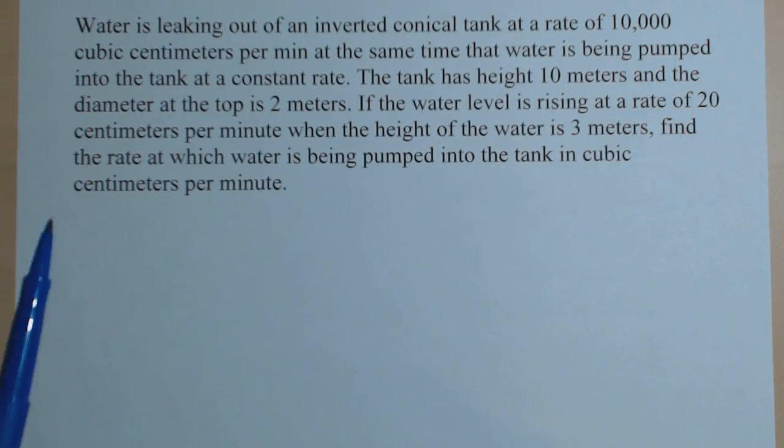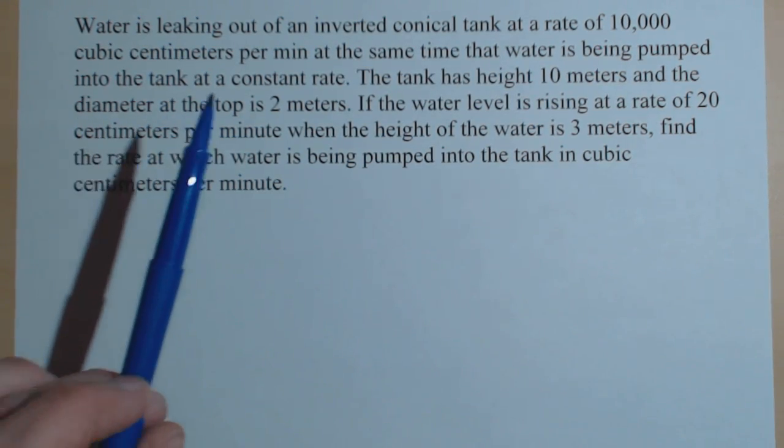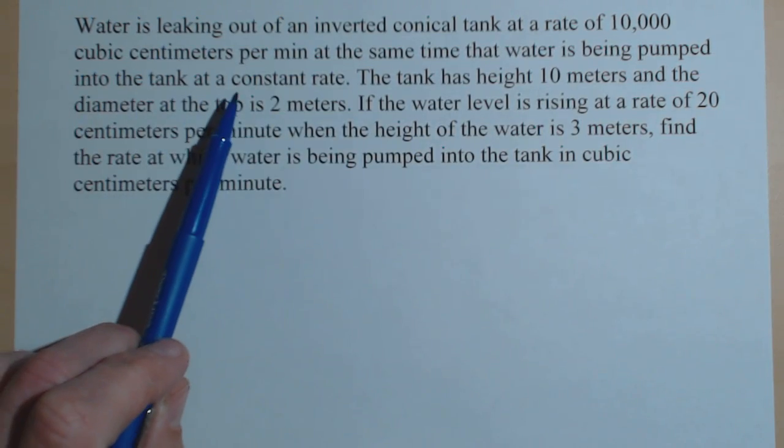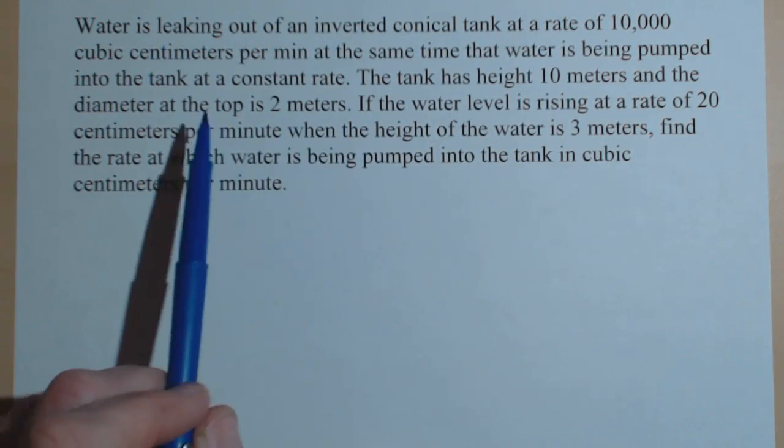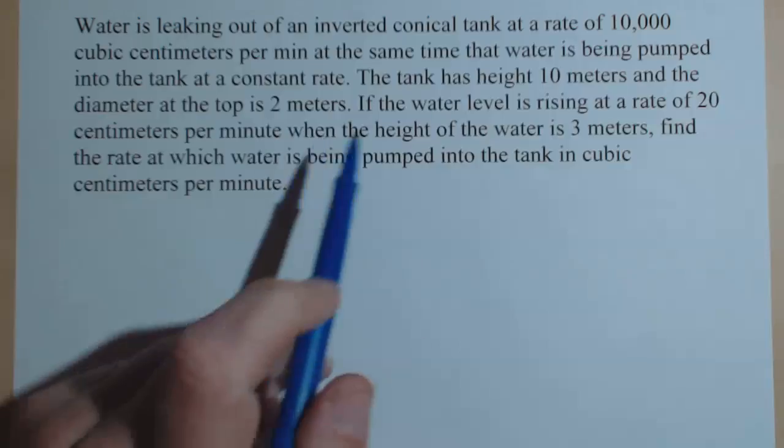In this situation, we have water leaking out of an inverted conical tank at a rate of 10,000 cubic centimeters per minute at the same time that water is being pumped into the tank at a constant rate.